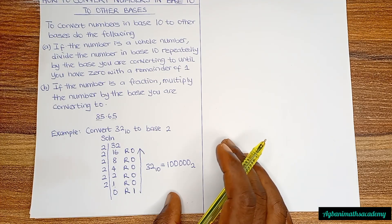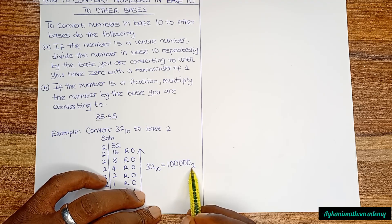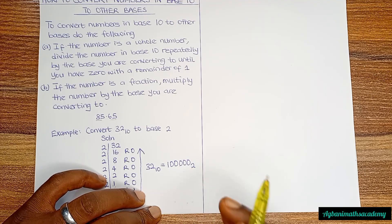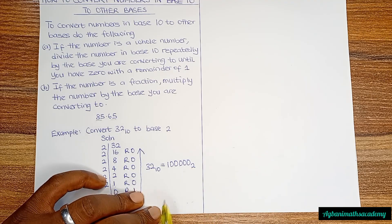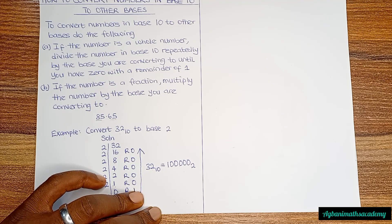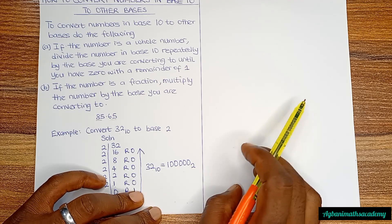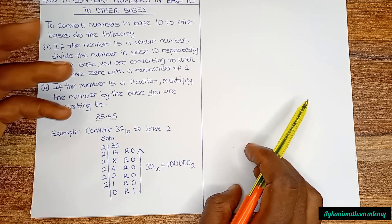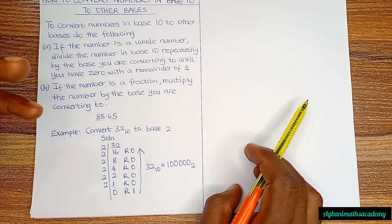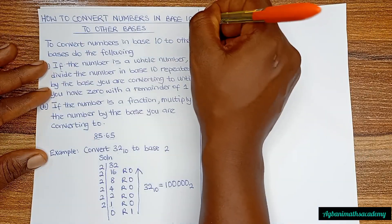In our previous video we said that computers and other electronic devices count in base 2. So whenever you type 32 on your keyboard, what the computer sees is 100000, because the computer only calculates in binary numbers. Let's look at another example.